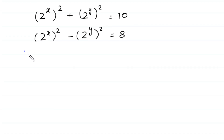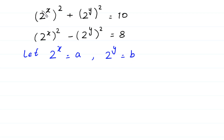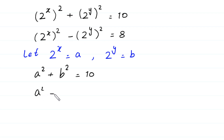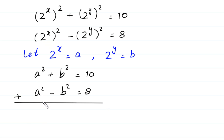Next, we suppose that 2 to the power x is equal to a and 2 to the power y is equal to b. Substituting a and b, the first equation becomes a squared plus b squared is equal to 10, and the second equation becomes a squared minus b squared is equal to 8. Adding these two equations: 1 a squared plus 1 a squared gives 2 a squared, and the b squared terms cancel, giving 2 a squared is equal to 10 plus 8, which is 18.